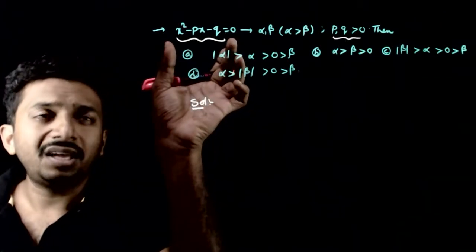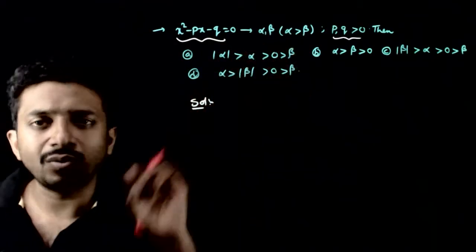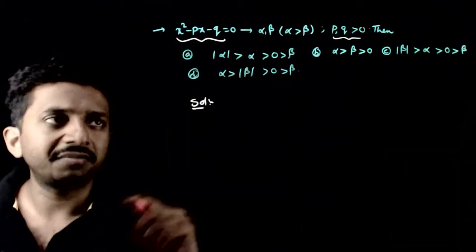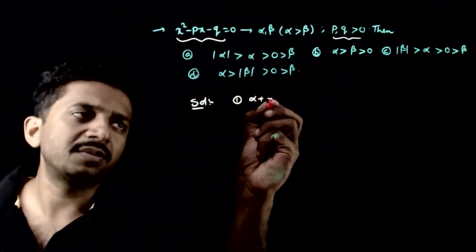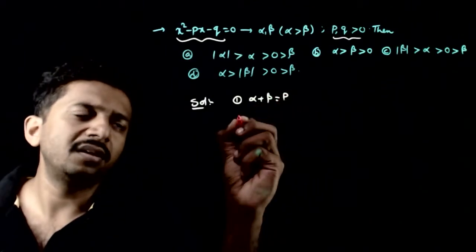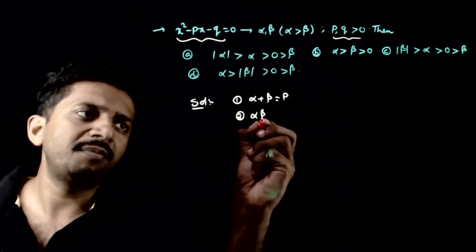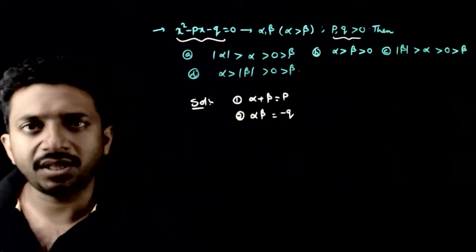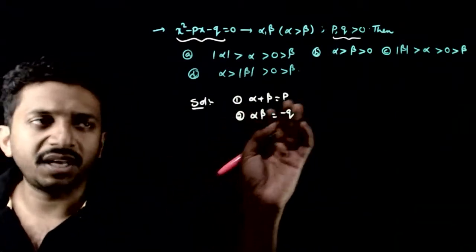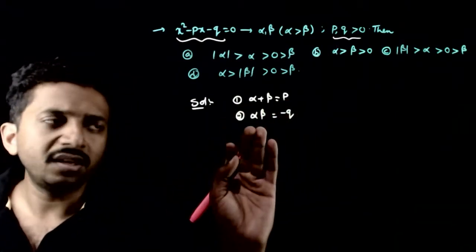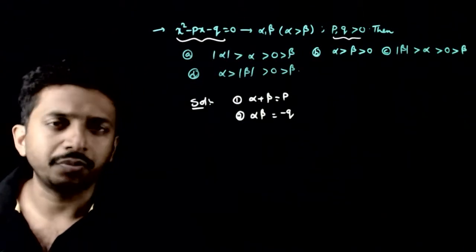For the equation x squared minus px minus q equals 0 with roots alpha and beta, we know: alpha plus beta equals p, and alpha times beta equals minus q. These are the two relations we will use.